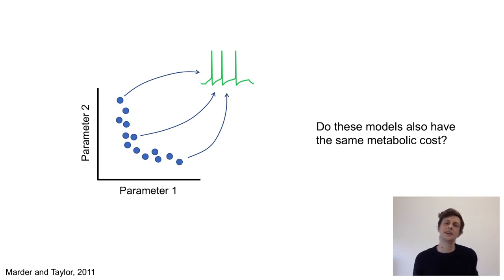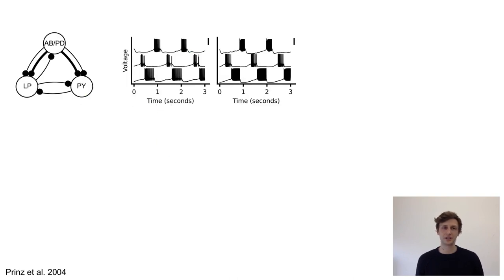To study this, we returned to a seminal model in neuroscience, namely the pyloric network in the crab and lobster. We used a model consisting of three model neurons, each of Hodgkin and Huxley type and with eight membrane conductance each, interconnected by seven synapses.